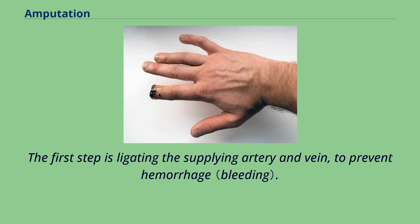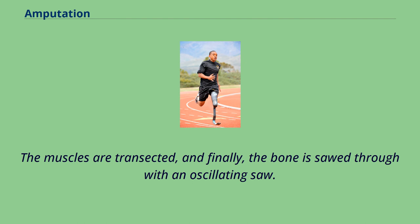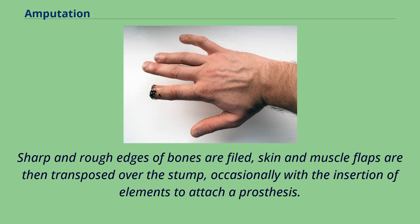The first step is ligating the supplying artery and vein to prevent hemorrhage. The muscles are transected, and finally the bone is sawed through with an oscillating saw. Sharp and rough edges of bones are filed, and skin and muscle flaps are then transposed over the stump, occasionally with the insertion of elements to attach a prosthesis.